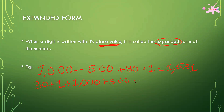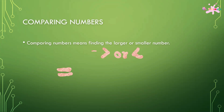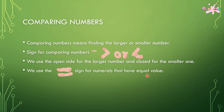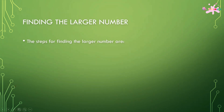Comparing numbers means finding the larger or smaller number. The signs used for comparing numbers are greater than or less than. We use the open side for larger numbers and the closed side for smaller ones. We use the equal-to sign for numerals that have equal value.